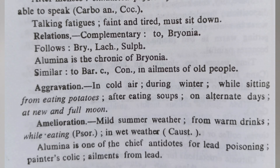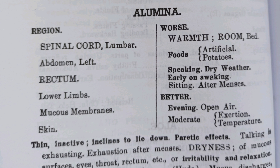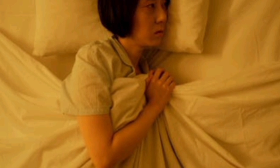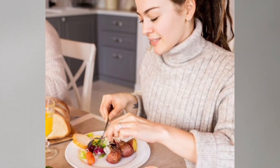We will now see its relation to other remedies from Allen's Keynotes. Alumina is complementary to Bryonia, as well as the chronic of Bryonia. Alumina is similar to Baryta carb and Conium in ailments of old people. Aggravation from eating potatoes, at new moon and full moon. In Boger Synoptic Key, the important modality of Alumina is worse from warmth of room and bed, and amelioration while eating, like Sarsaparilla.